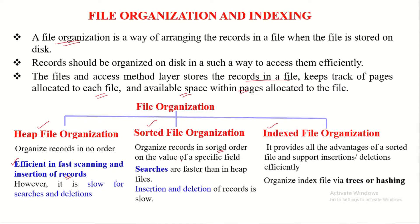In sorted file organization, records are organized in sorted order on the value of a specific field, so searches are faster than in heap files when the search is made on that particular field. However, insertion and deletion are slow because records must be shifted to maintain sorted order even after insertions and deletions — this is a drawback of sorted file organization.